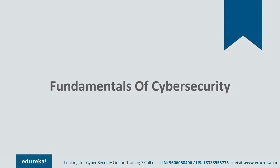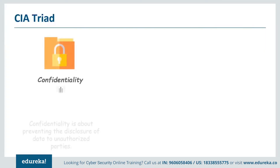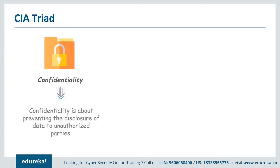Earlier I said that cyber security is a set of techniques and practices employed to protect data. But what are we actually protecting data from? We are protecting data from unauthorized access, unauthorized modification, and unauthorized deletion. These three terms are related to what we know as the CIA triad in cyber security. CIA stands for confidentiality, integrity and availability. Confidentiality is exactly what it sounds like — keeping your information secret. It is the protection of information from unauthorized people and processes.